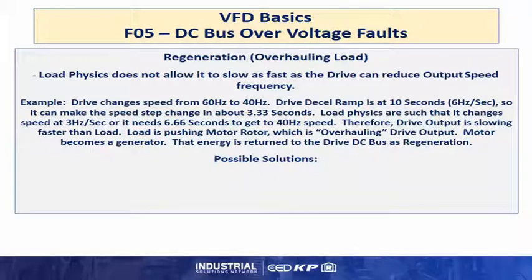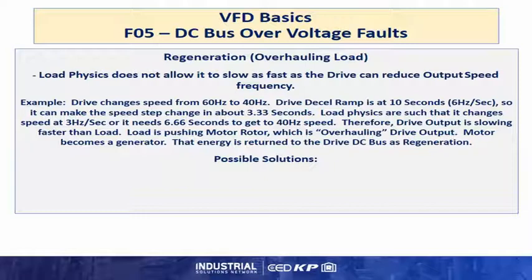In regeneration or an overhauling load, the load physics do not allow the load to slow as fast as the drive can reduce the output speed frequency. For example, the drive changes speed from 60 to 40 hertz. The drive decel ramp is at 10 seconds or 6 hertz per second so it can make the speed step change in about 3.33 seconds. Load physics are such that it changes at 3 hertz a second, meaning 6.66 seconds to get to 40 hertz speed. Therefore, drive output is slowing faster than load. The load is now pushing the motor rotor which is overhauling the drive output. The motor becomes a generator and that energy is returned to the drive DC bus as regeneration.